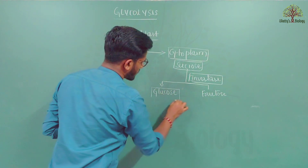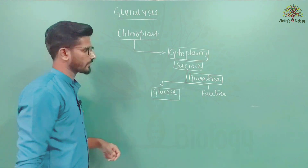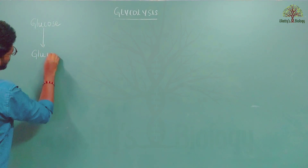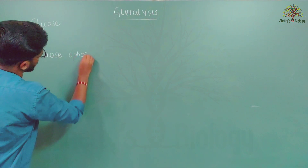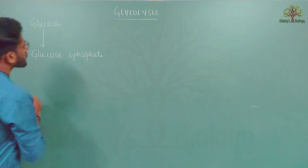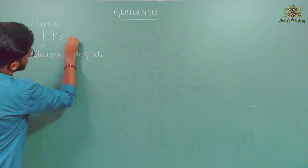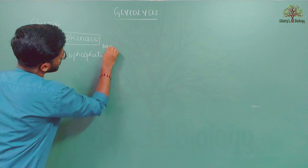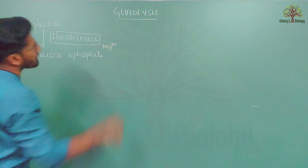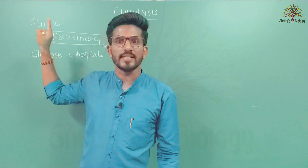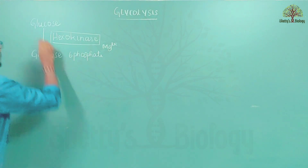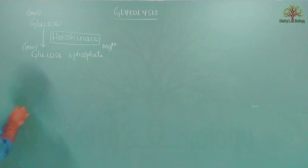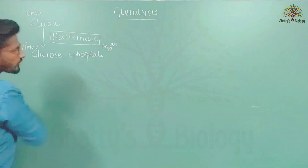Glycolysis takes place by the breakdown of glucose. One molecule of glucose is converted into one molecule of glucose-6-phosphate by the activity of the enzyme called hexokinase, along with the mineral magnesium 2+. Glucose has 6 carbons, and glucose-6-phosphate also maintains 6 carbons.